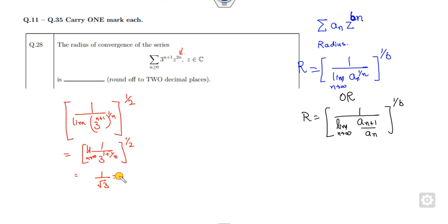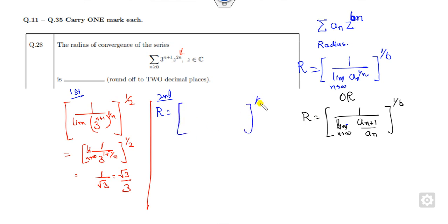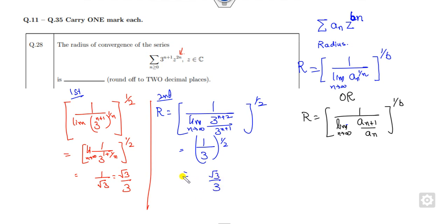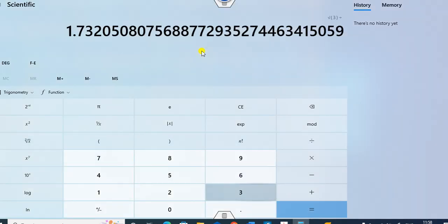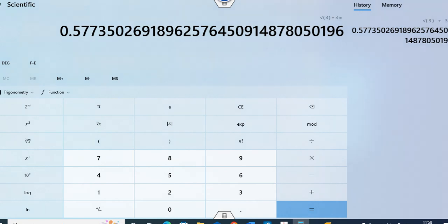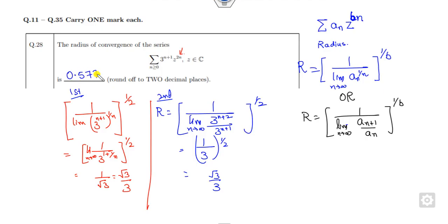That gives R = 1/(2√3) = √3/3 ≈ 0.577. Using the ratio method: aₙ₊₁/aₙ = 3^(n+2)/3^(n+1) → 3, confirming R = 1/(2·√3) = √3/3. Since you must write in two decimal places, the answer is either 0.57 or 0.58.